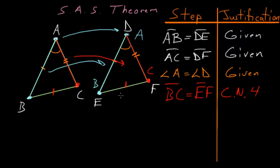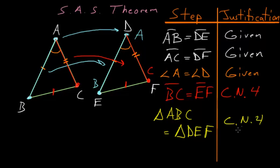And another consequence of the fact that all of these points are now coinciding with each other is that the triangles themselves are equal. So triangle ABC is equal to triangle DEF from this common notion number four.